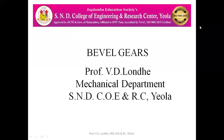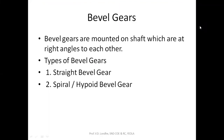Hello friends. Today we are going to see bevel gears and their terminology. Bevel gears are basically mounted on shafts whose axes are at an angle with respect to each other. There are different types of bevel gears such as straight bevel gears and spiral or hypoid bevel gears.